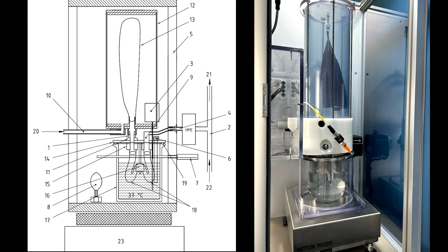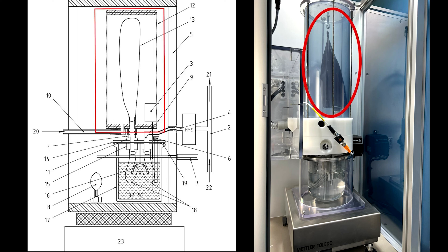The components of the humidity generator are as follows. Starting at the top we have the reservoir and airbag. The airbag simulates the lung function, inflating and deflating with each breath.